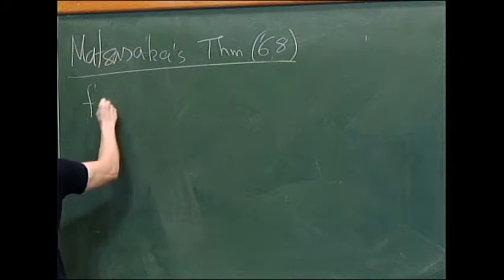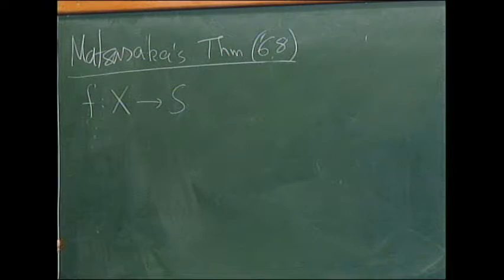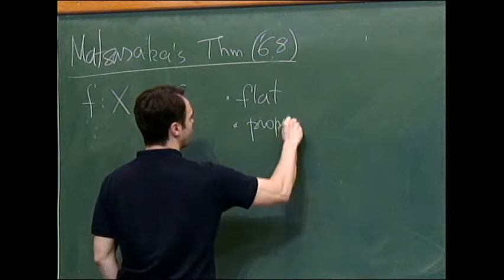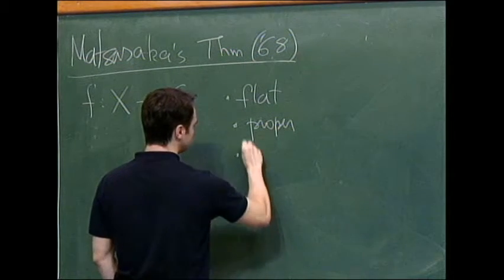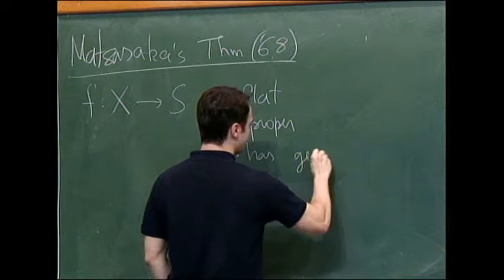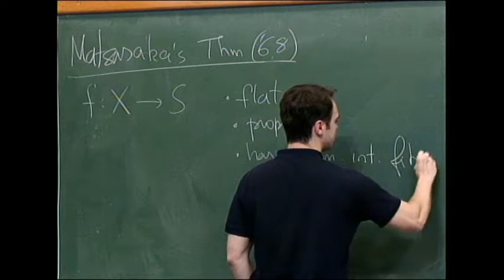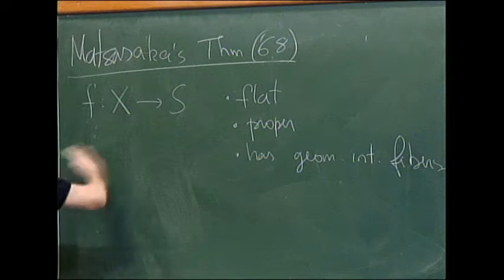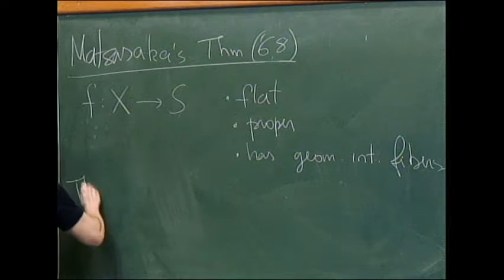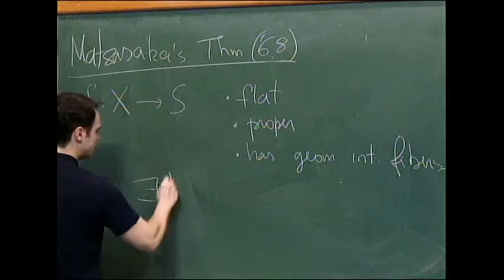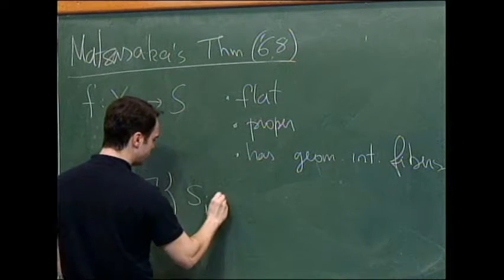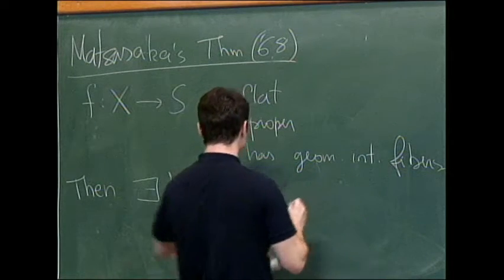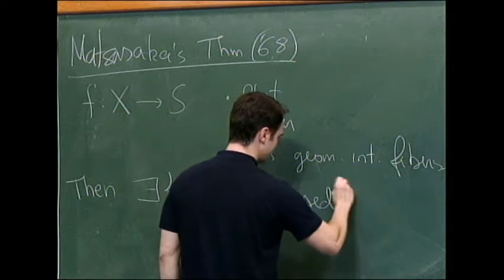It says this, if you have a morphism of schemes F from X to S, which is flat, proper, and has geometrically integral fibers, it's a family of integral varieties, proper integral varieties. Then, just under these assumptions, then there exists a countable family of subvarieties of the base, closed subvarieties S_I inside S. They could be equal. So let me write closed, just for emphasis. The indices are natural, so it's countable.